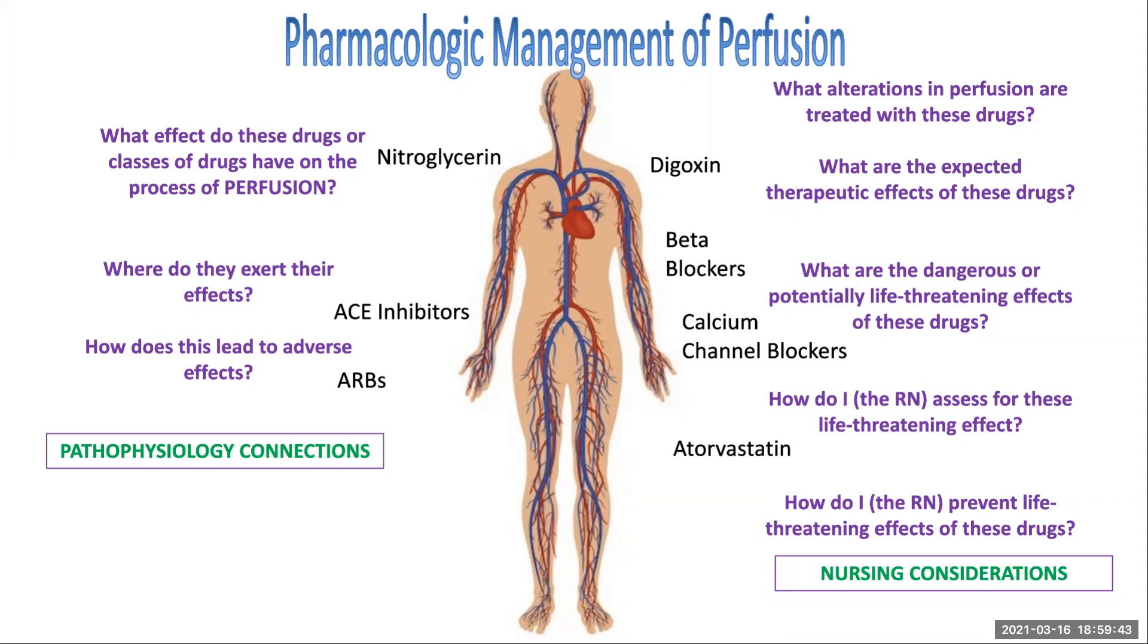Well, with atorvastatin, the therapeutic effect is reduced cholesterol and triglycerides. We want to see in our labs that those levels are coming down. That's really the therapeutic effect. The side benefit is then usually a reduction in hypertension, reduction in blood pressure, and hopefully then a reduction of overall issues with perfusion. But then let's say we give nitroglycerin. What is it that we expect to happen when we give nitroglycerin? What is supposed to happen? And you will know that if you understand the effect nitroglycerin has on perfusion and that you understand what alteration in perfusion causes us to want to use nitroglycerin.